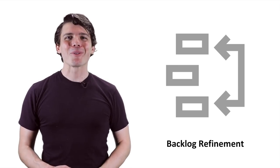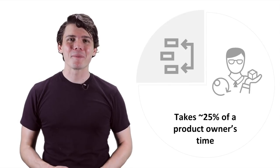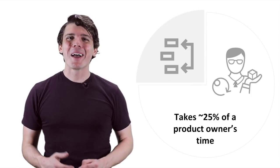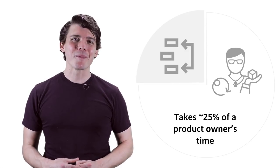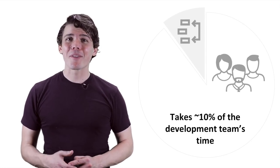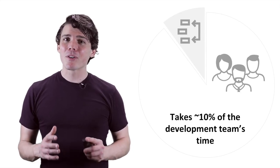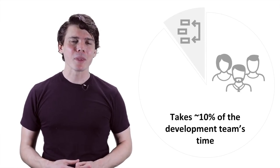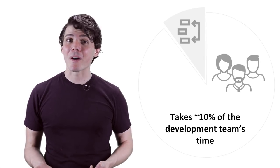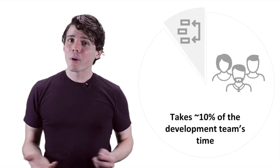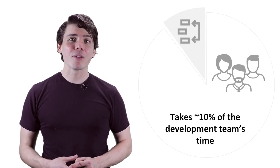Backlog Refinement is the work of refining, estimating, and ordering items in the product backlog. As a product manager, I used to spend about a quarter of my time working on my backlog. The Scrum Guide suggests that the development team also spend up to 10% of their capacity supporting backlog refinement. This usually happens in regularly scheduled events such as backlog refinement and sprint planning, but it also occurs ad hoc, such as in a parking lot discussion after the daily scrum.